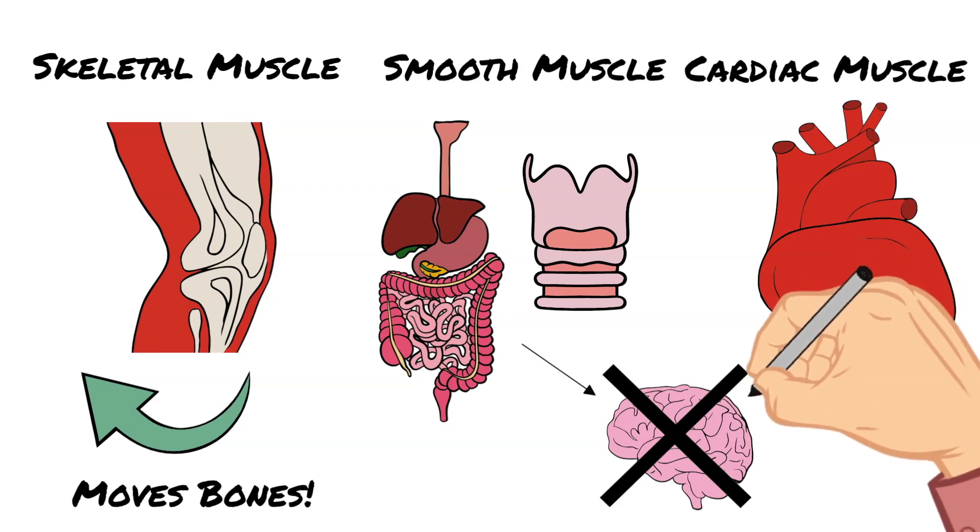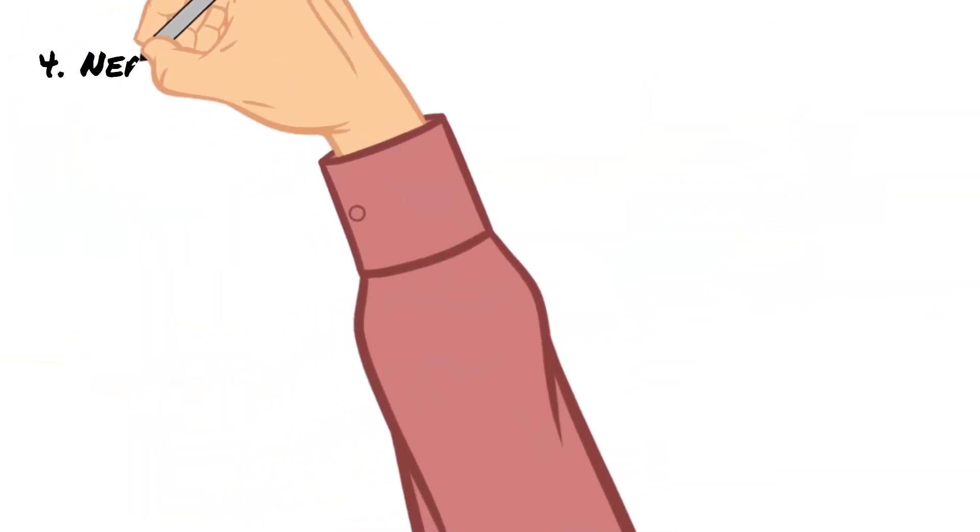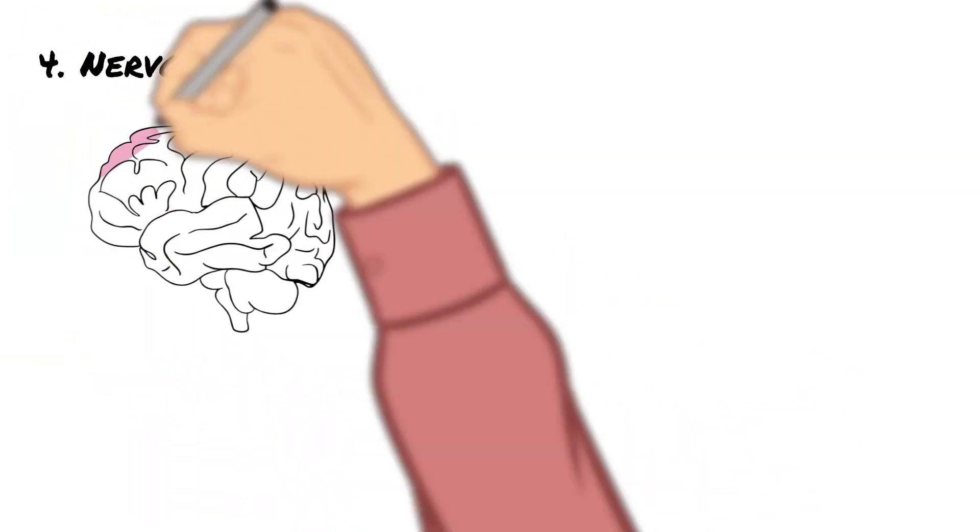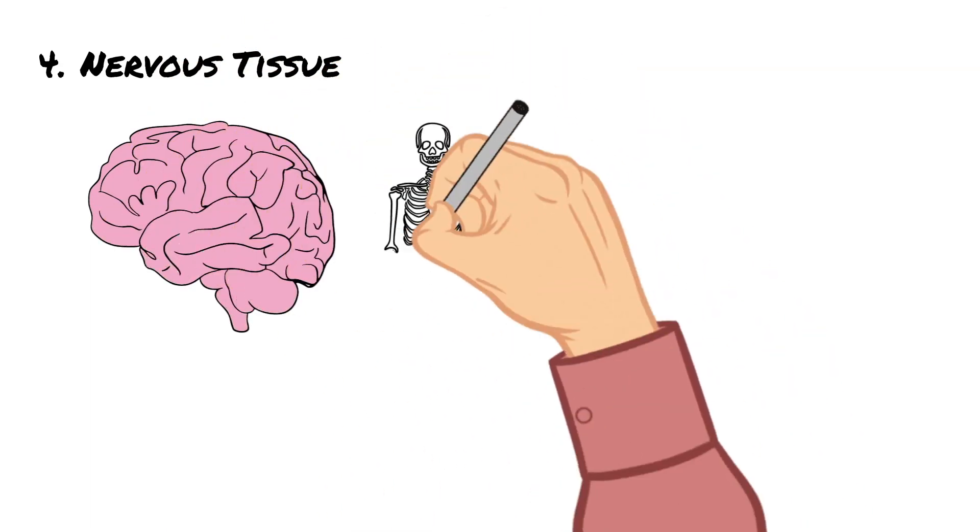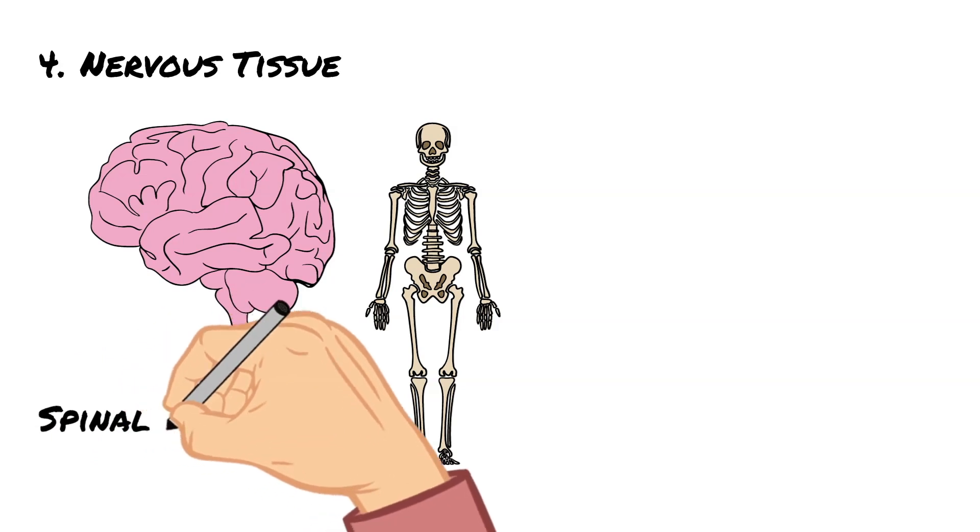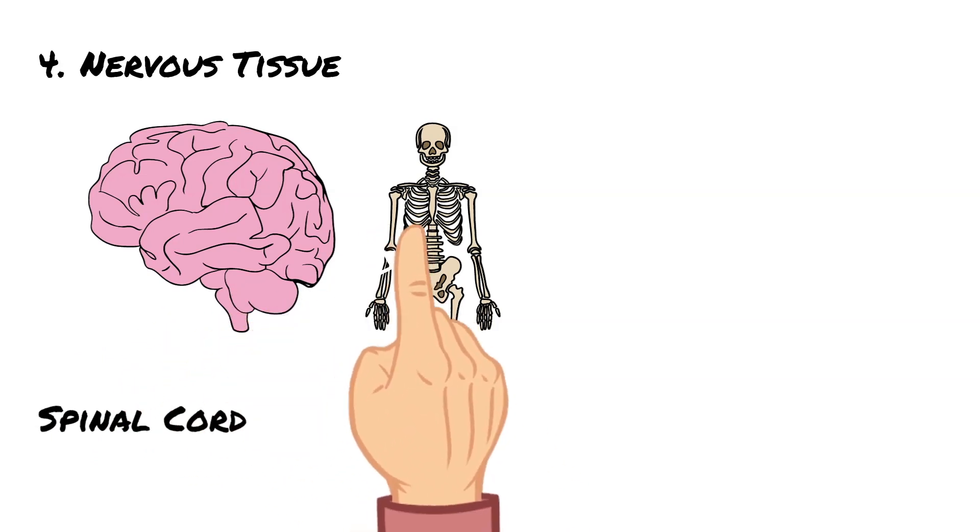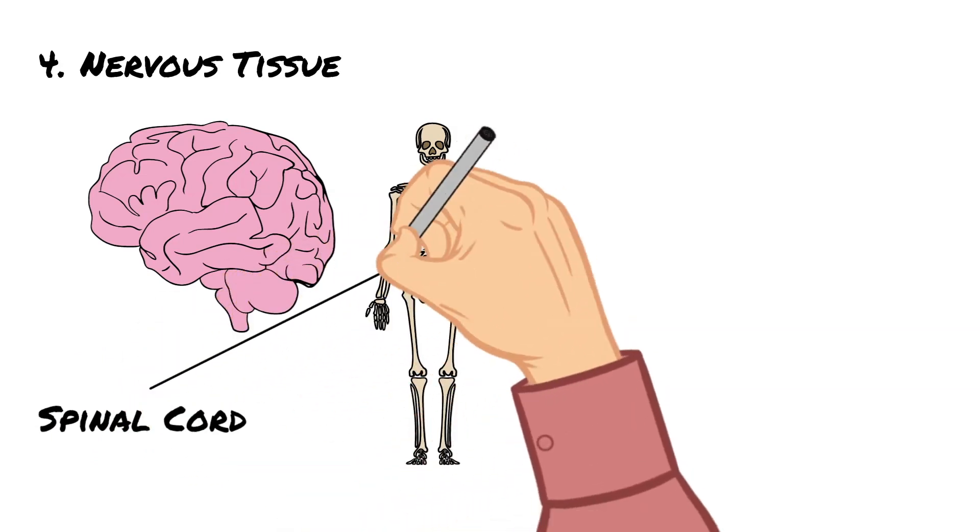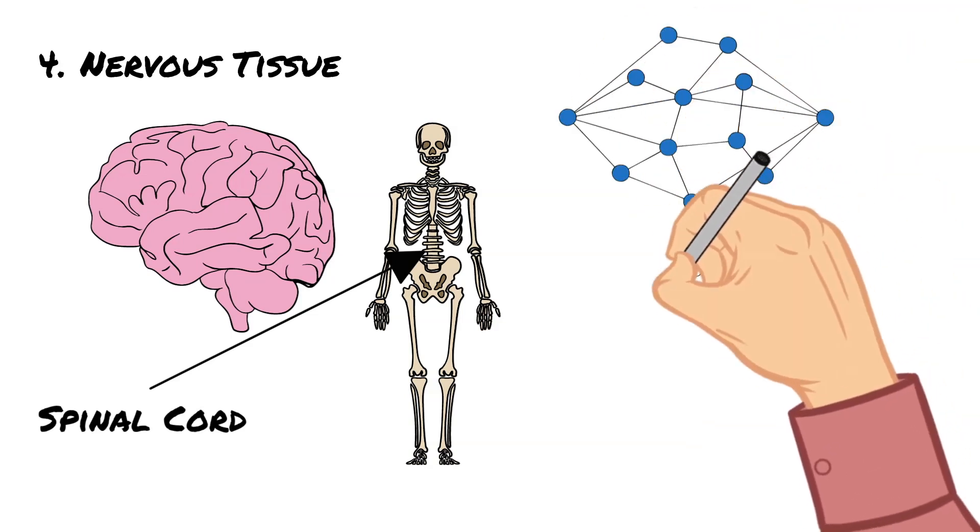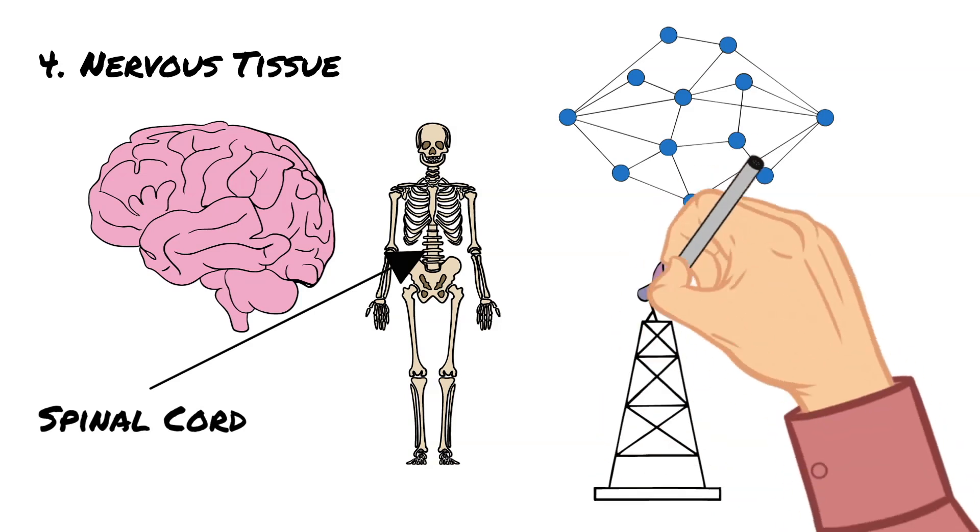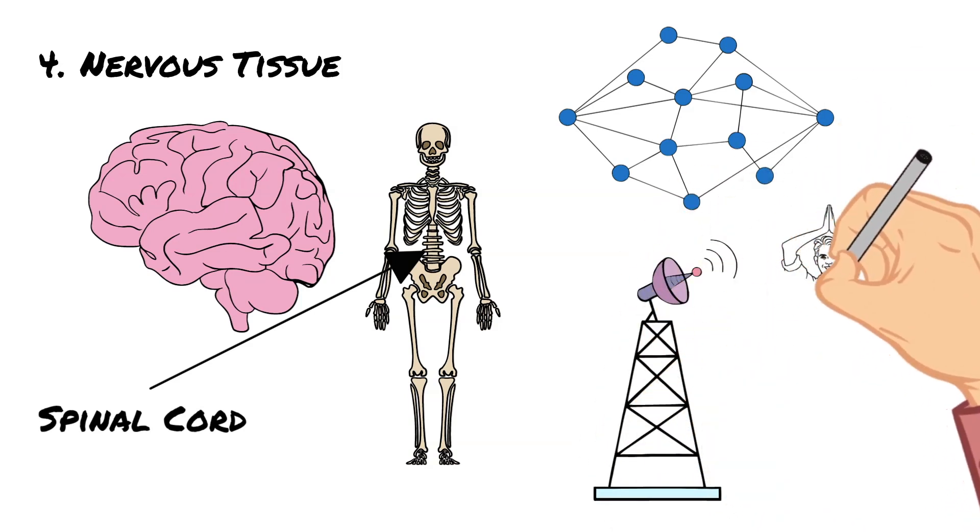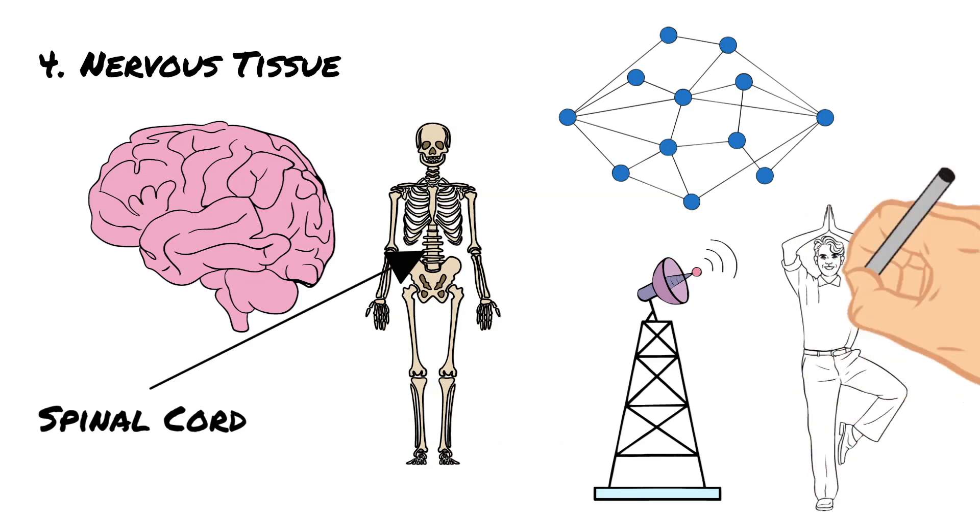The last type of tissue is nerve tissue. Nervous tissue is the main part of the nervous system, which is the brain, the spinal cord, and a complex network that runs throughout your body. Nervous tissue controls body functions. It is made up of neurons which transmit impulses.